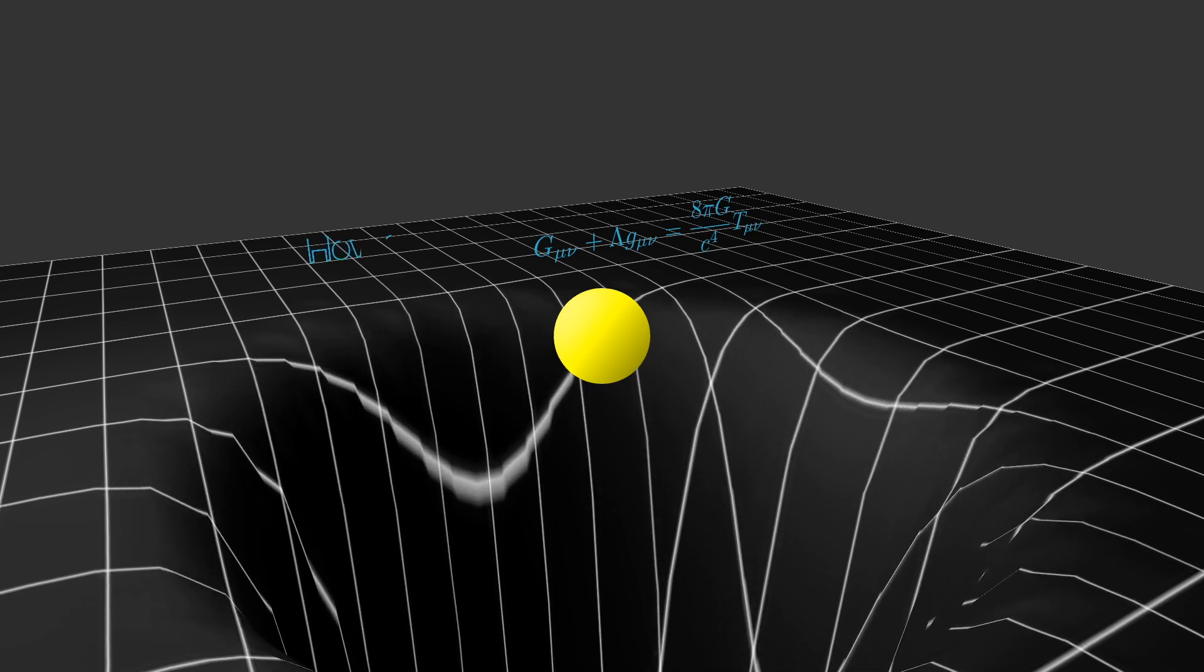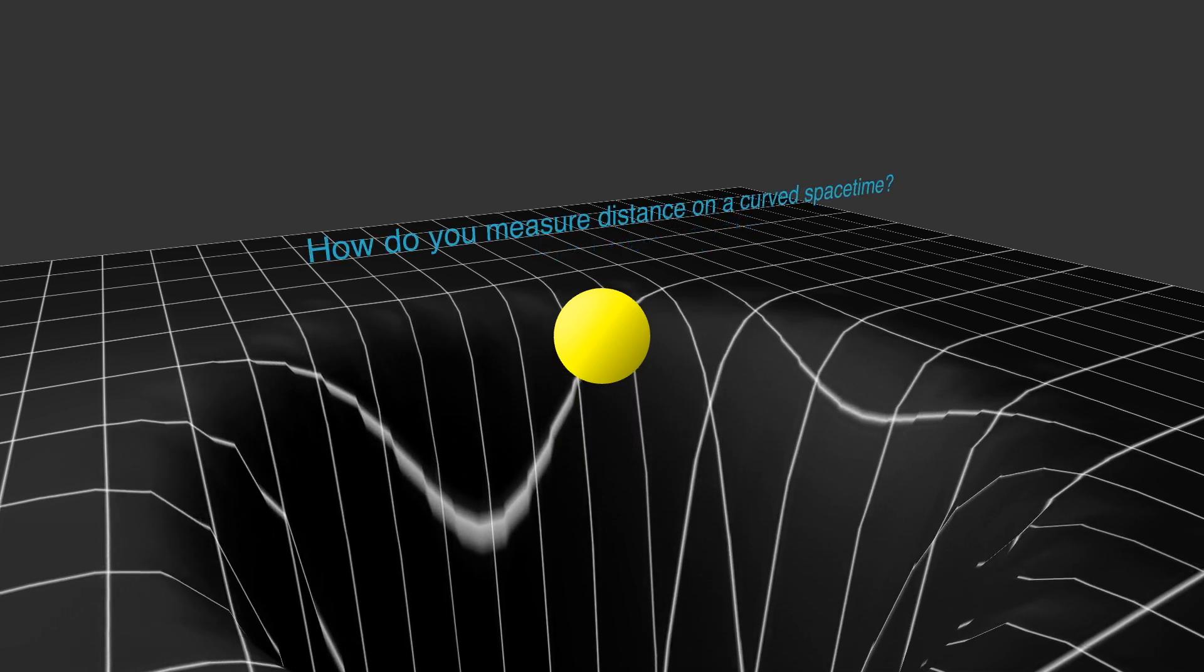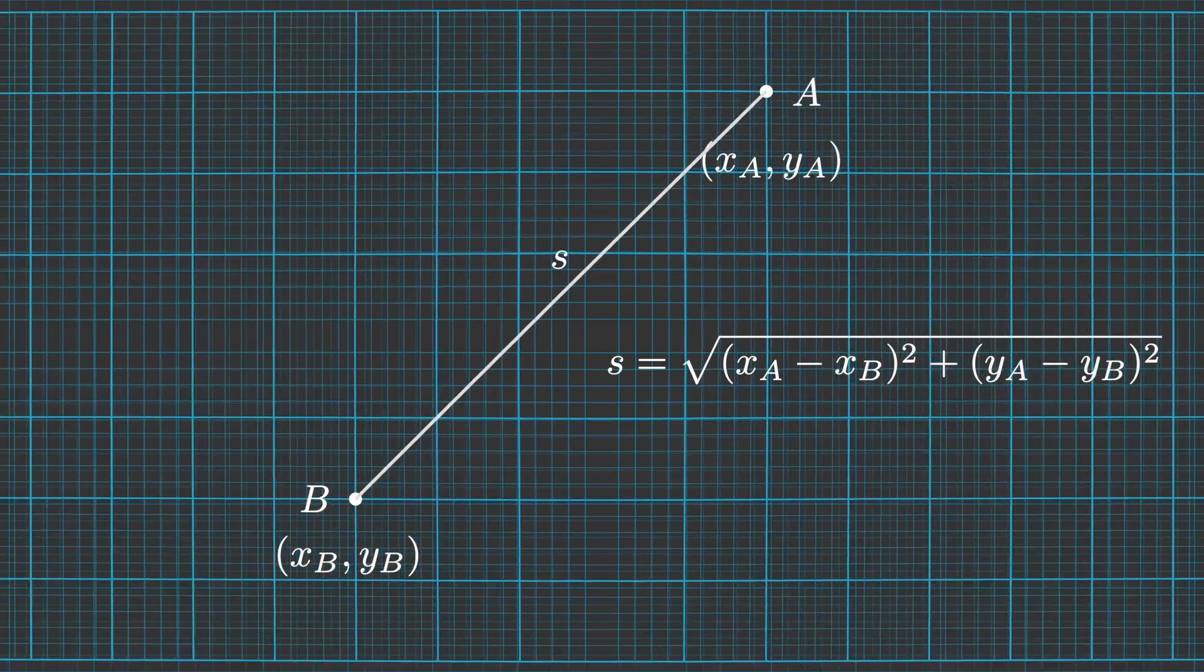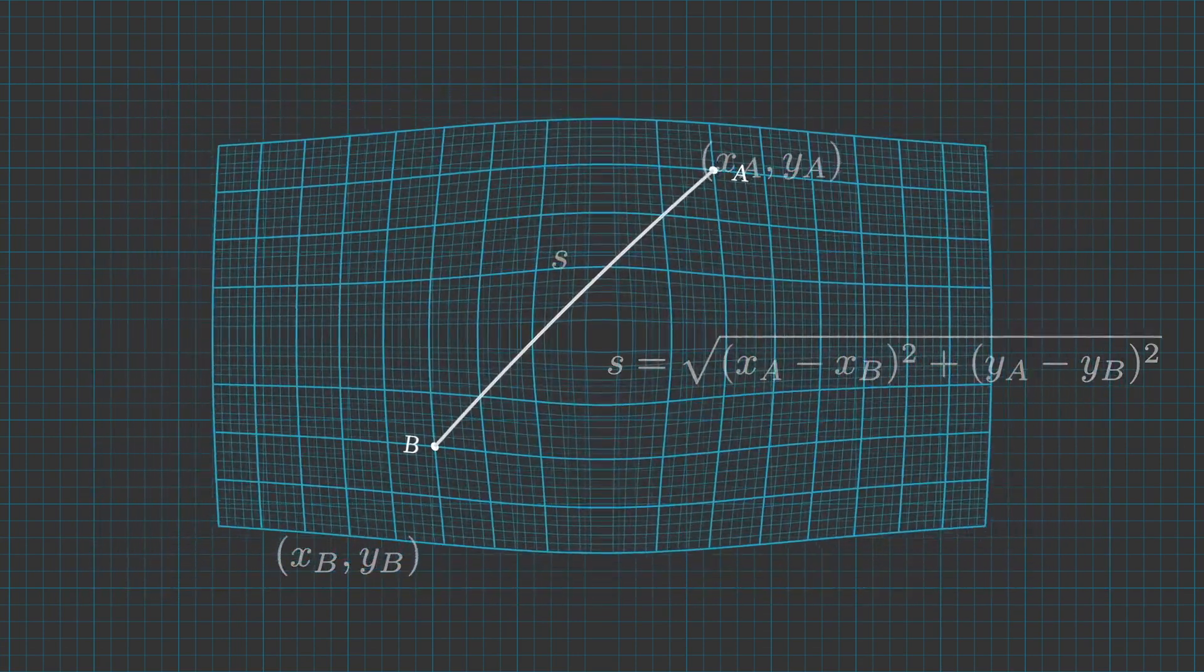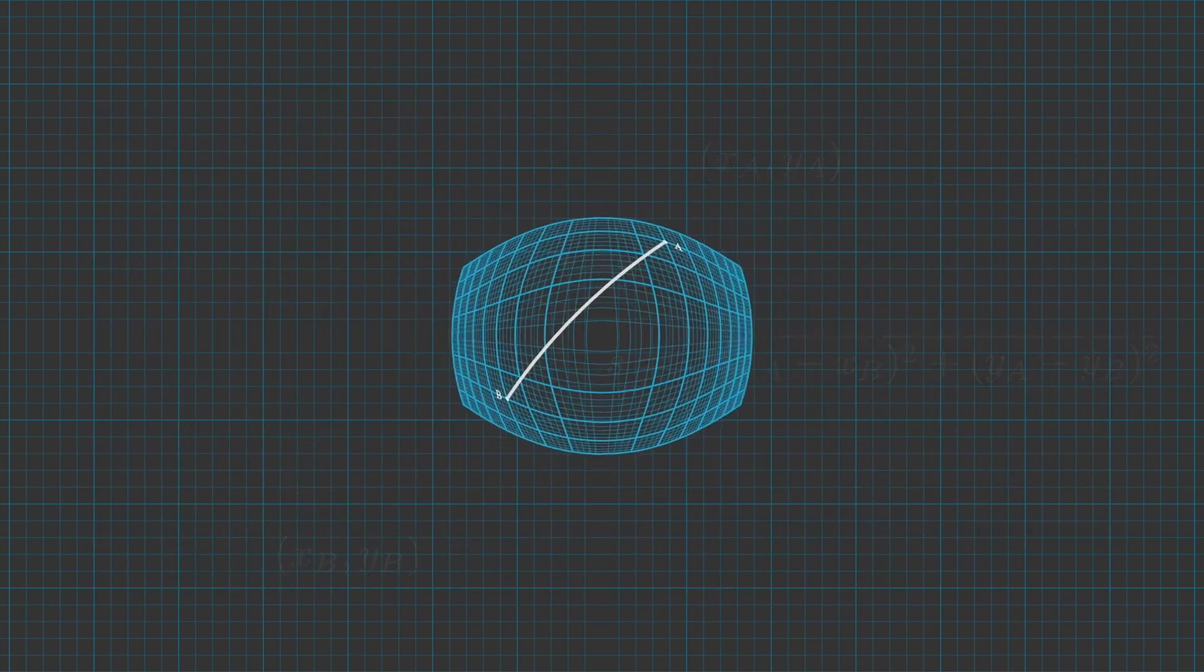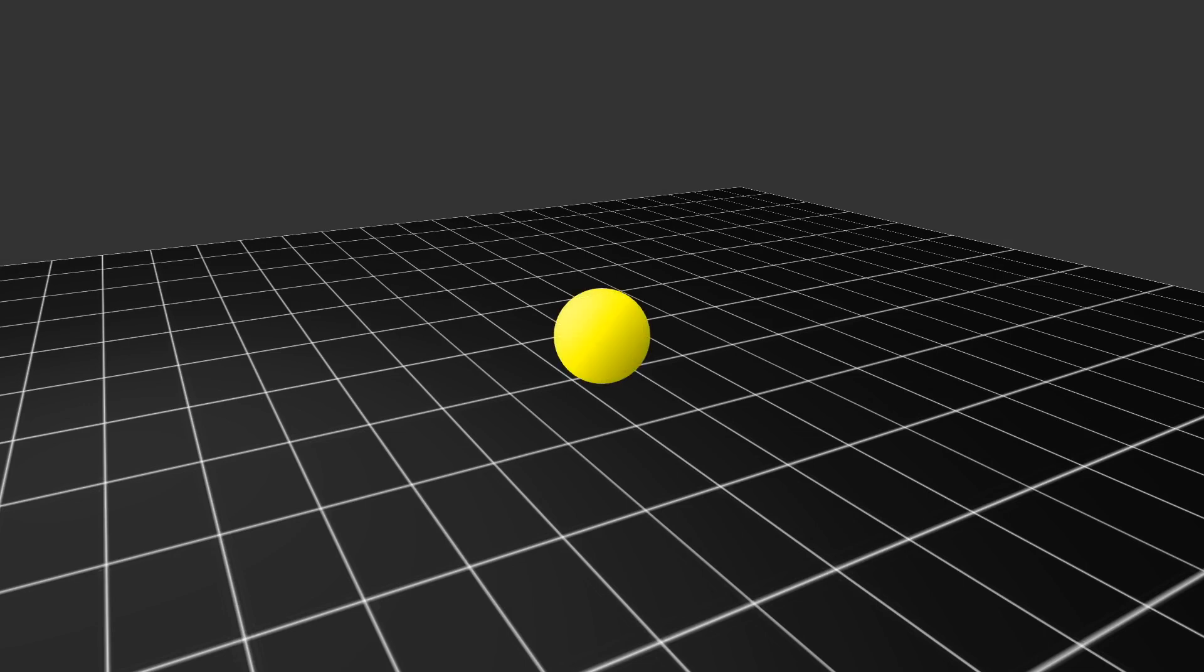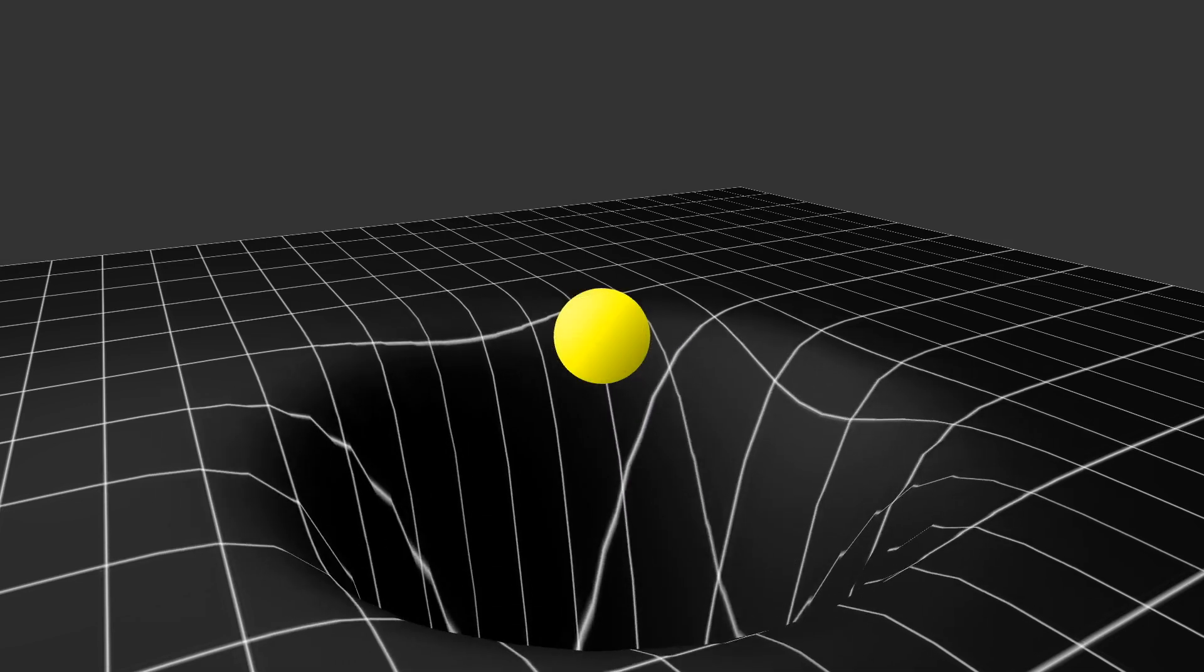One of the key challenges was: how do you measure distance in a curved space-time? Because if you consider a flat space, you can easily determine the distance between point A and B using Pythagoras' theorem. But once space is curved, these simple rules no longer apply, because the grid itself bends. We need to introduce a mathematical object called the metric that accounts for the curvature. Deriving the metric for a specific situation is a big part of general relativity.